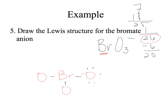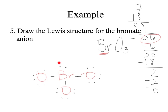I'll distribute the 20 electrons — placing 18 around the outer oxygens and leaving 2. Each oxygen now looks like it has 8 — great. Bromine only has 6, so I'll take the remaining 2 electrons and give them to bromine as a lone pair. Now bromine also has 8: it's sharing 6 and has 2 of its own.